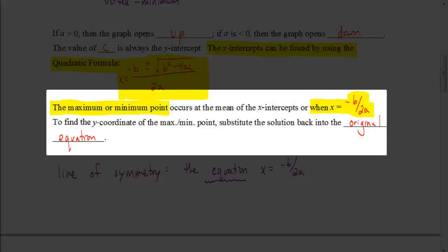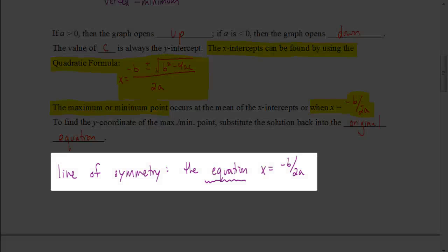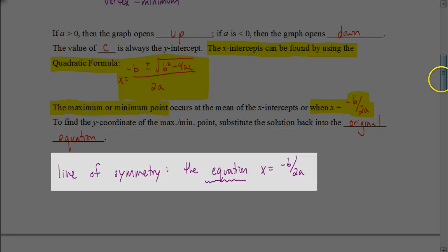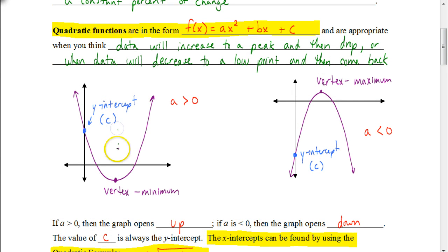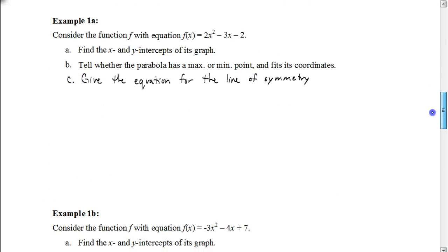To find the vertex, use the equation x equals the opposite of b over 2a. That gives you the x value of the vertex. Then plug that x value back into the equation to get the y value. The line of symmetry is always in the form x equals the opposite of b over 2a — it must include 'x equals' because it's a vertical line. For example, that line of symmetry would be found by taking x equals the opposite of b over 2a.